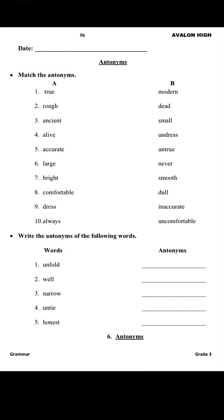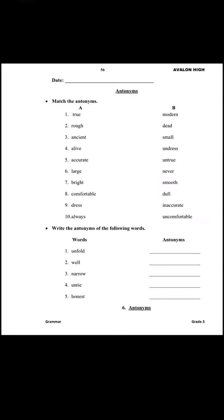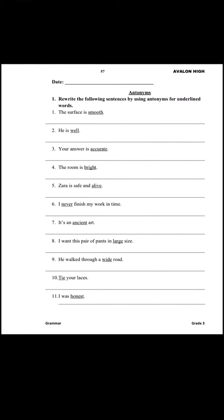Now come to the next question: write the antonyms of the following words. You have to write the antonym or opposite meaning of the given words. Number one is 'unfold' — what is the opposite of unfold? Fold, yes. Number two: 'well' — what is the opposite of well? Unwell, yes. In the same way you will do this page.